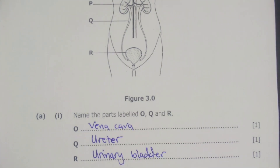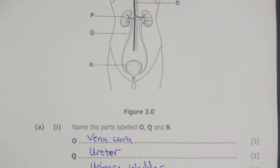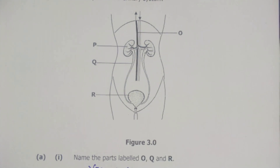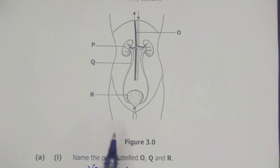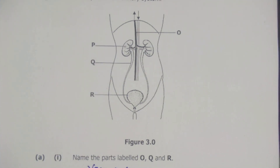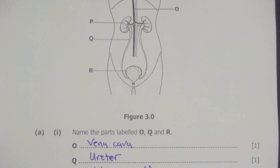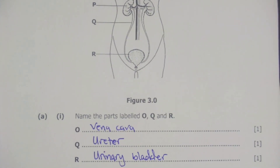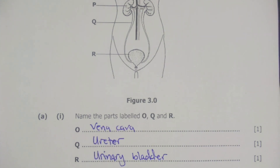These were the parts we were given to label. For part O, this is the vena cava; Q is the ureter; and we have the urinary bladder for R. Of course, P here is the kidney. These are the parts which we labeled. That was the solution to question A1. Let's now move on to the next question.